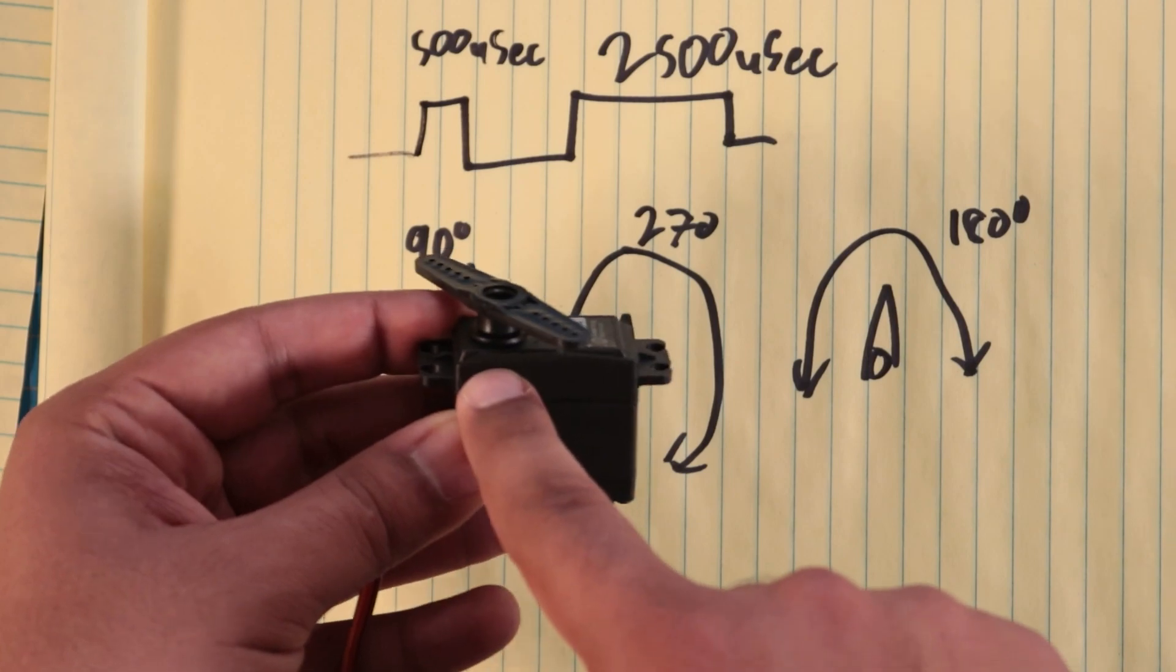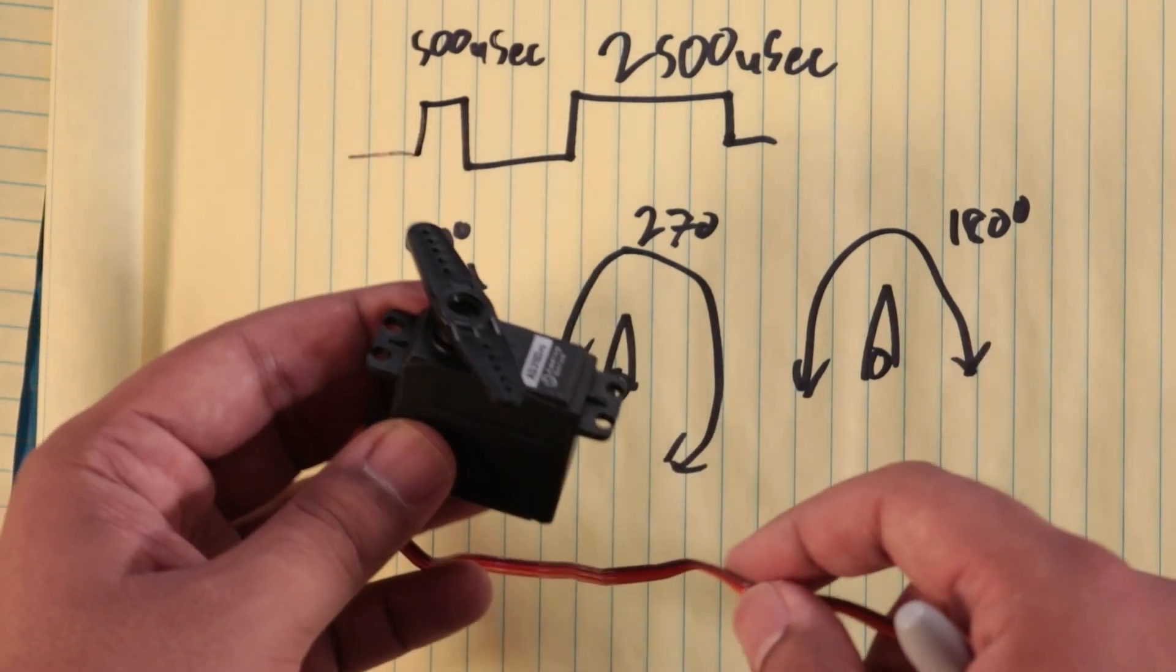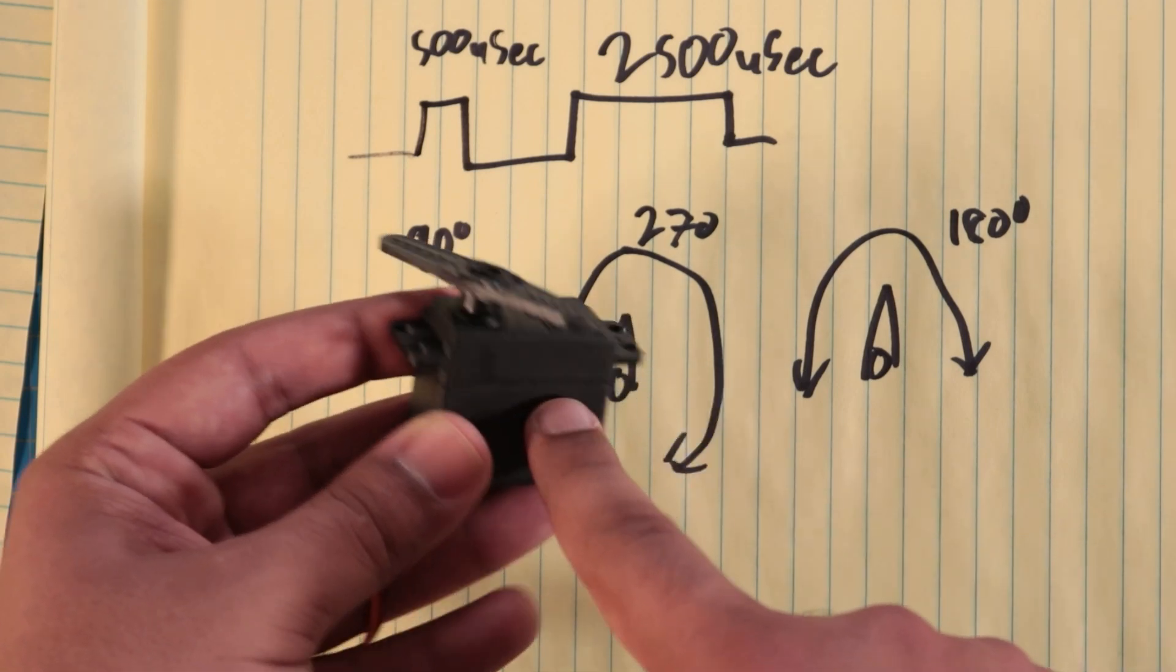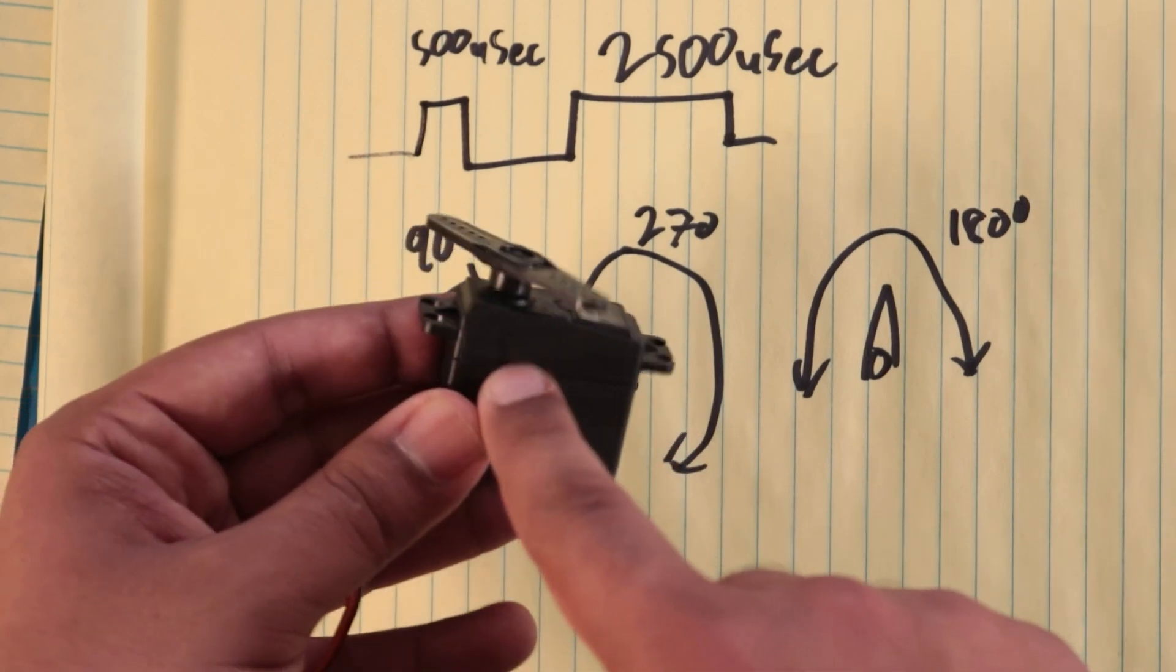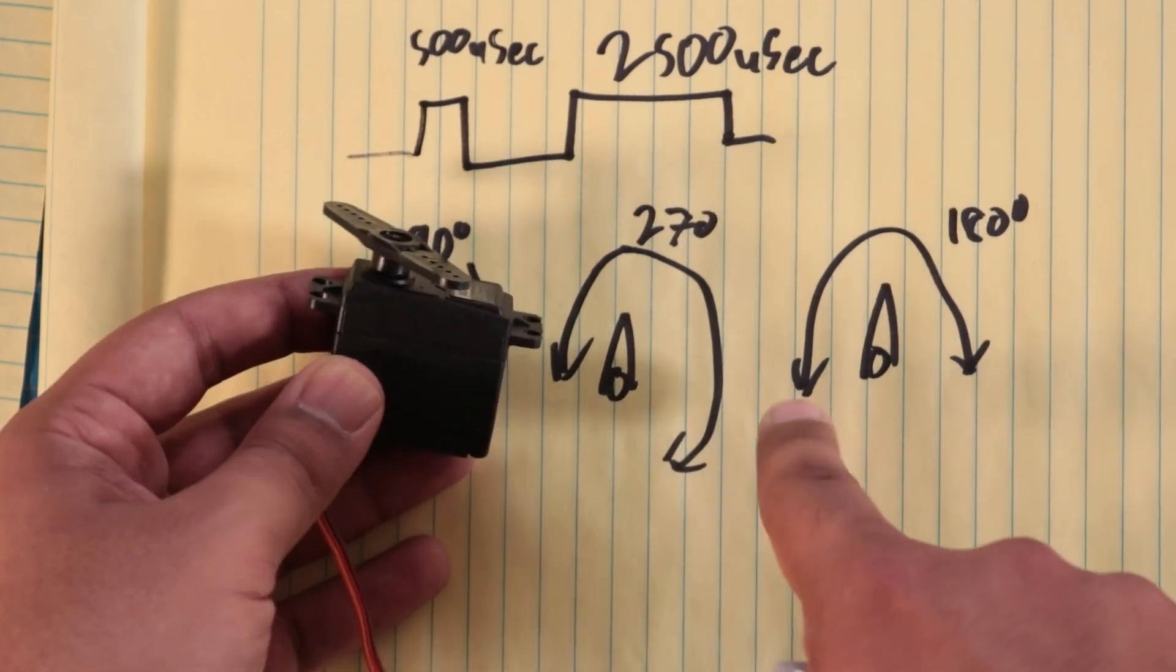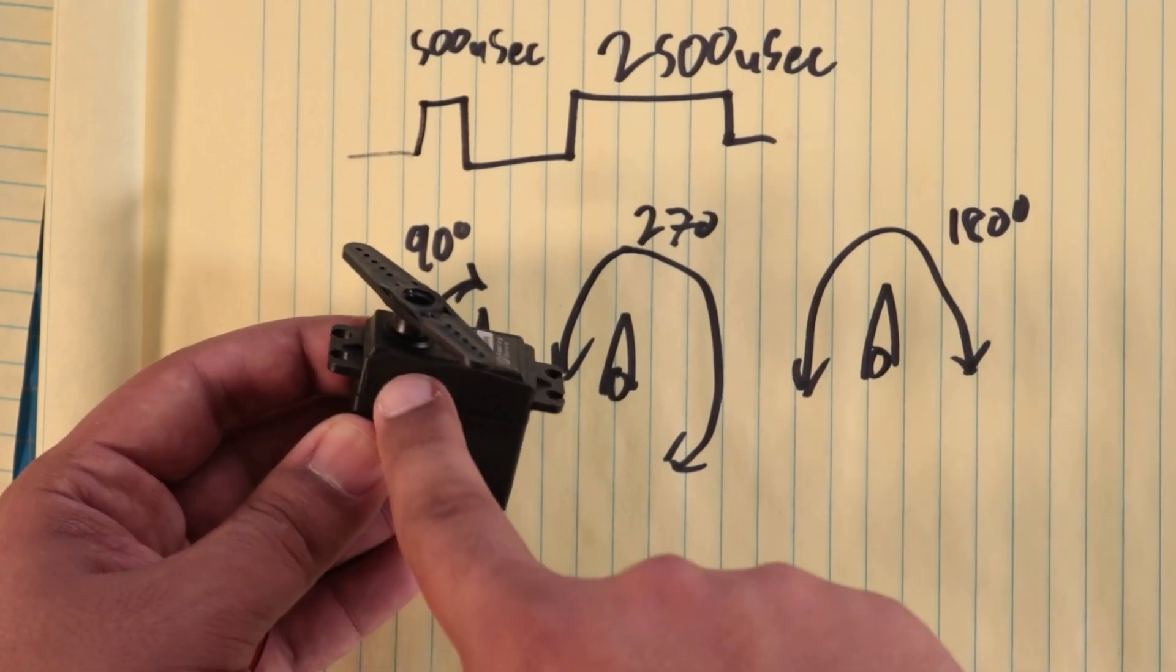When I install a servo into a character, yes, I can set it to a known position before I install it, but let's say I nudge it just a little bit, I no longer know what position it's at. With the cheap guys, there's no feedback. So yes, the servo itself is a closed-loop system, but for my control purposes, I don't know where it's at.